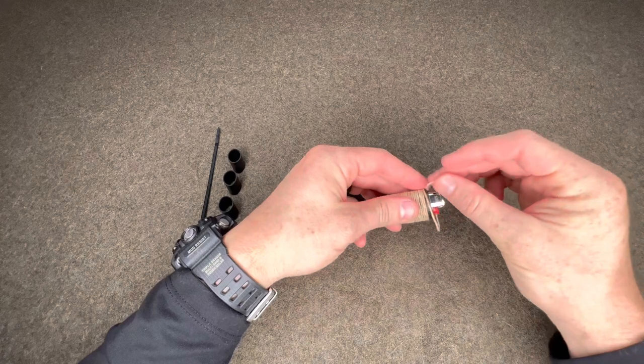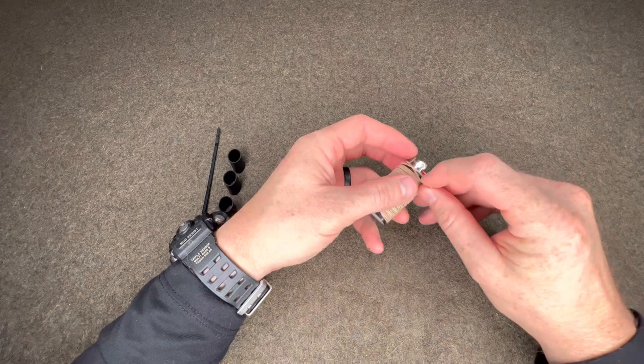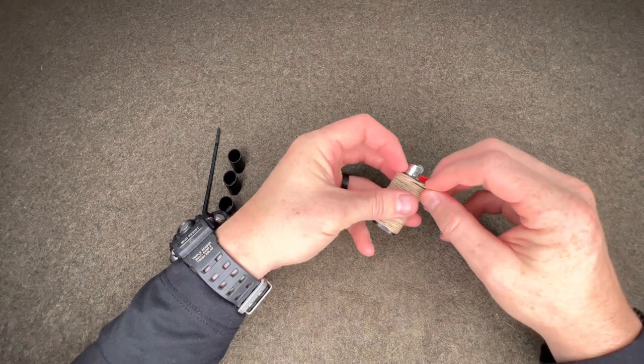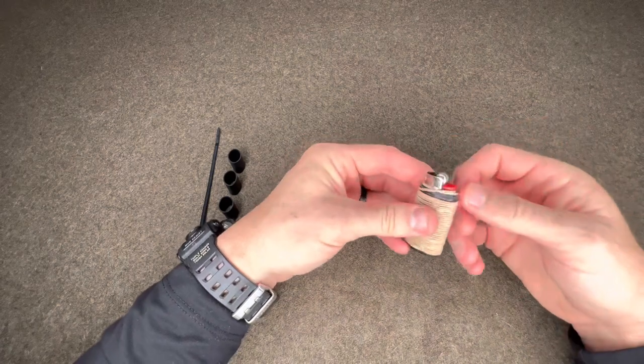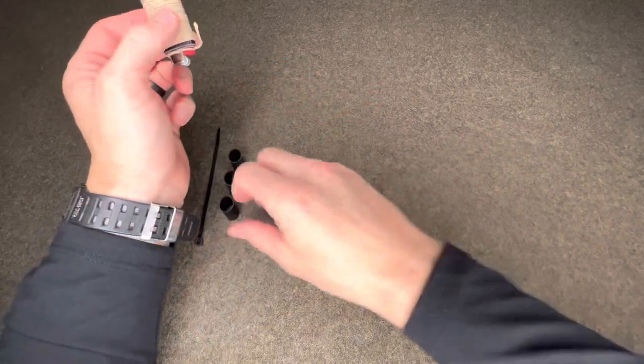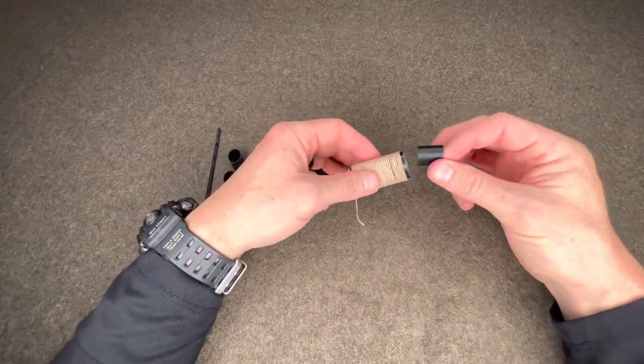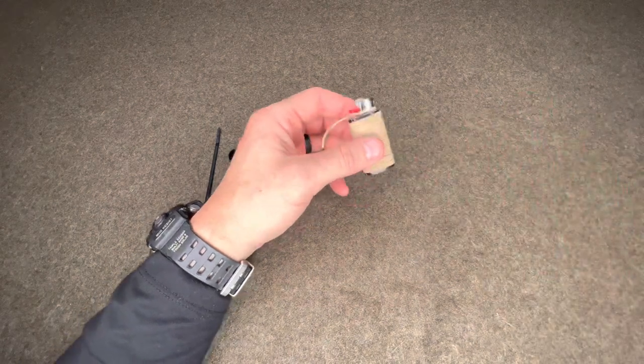So I'm going to go ahead and lock this around just so I can secure this when I'm putting the ranger bands on so it doesn't come loose. Oh, that works too. Alright. So that's the way it should look. And then what I'm going to do is these are mini ranger bands. I'm going to go ahead and secure these on the bottom and the top like this.